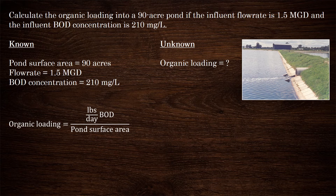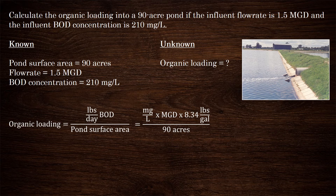Let's plug in what we have into this formula. On the bottom, 90 acres. And on the top, this is the pounds per day formula: milligrams per liter of BOD multiplied by mgd, which is the flow rate, multiplied by the conversion factor, 8.34 pounds per gallon.